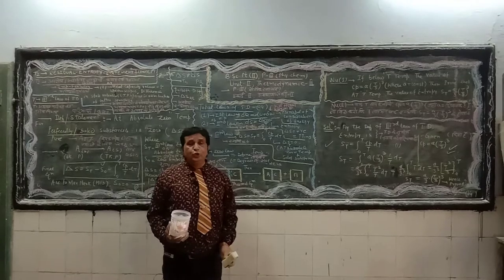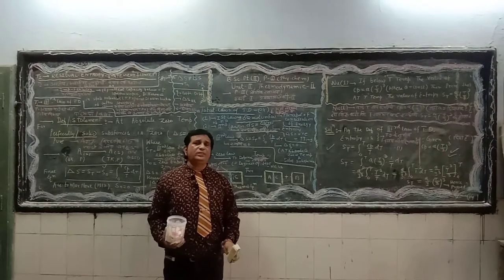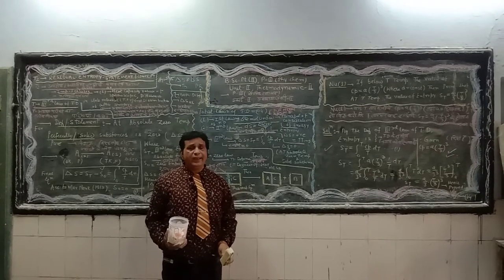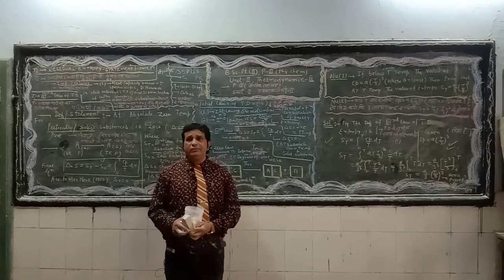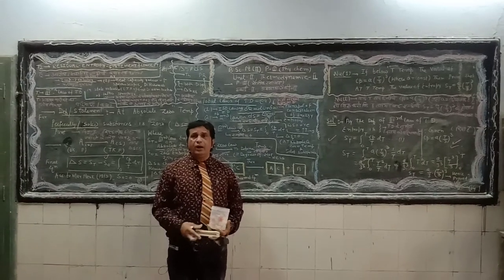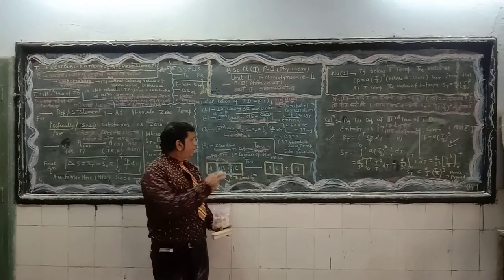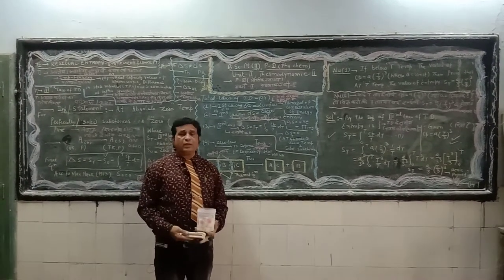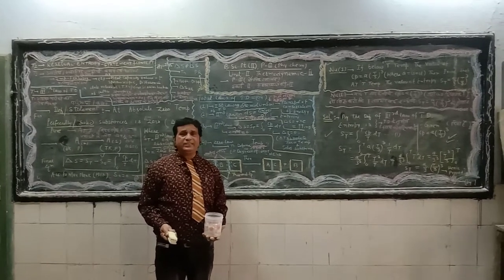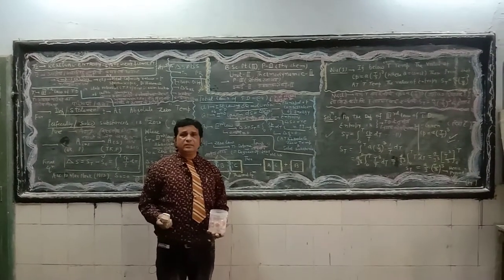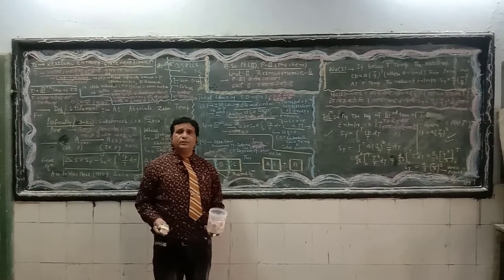It is also observed by Max Planck (1930) that for perfectly crystalline solid substances, theoretically S_0 equals zero. The fundamental equation of the Third Law can therefore be written as: ΔS = S_T = ∫₀ᵀ (Cp / T) dT. We have now explained three fundamental laws of thermodynamics. The Zeroth Law of Thermodynamics will be delivered tomorrow.